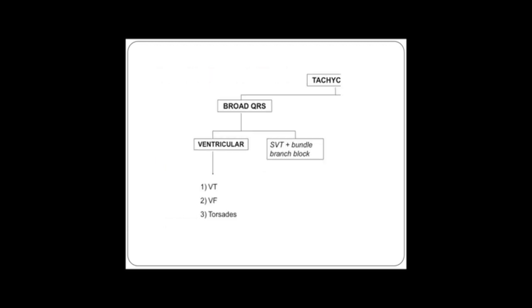So just to say again, broad complex is usually ventricular, except in a situation where you have one of these bundle branch blocks and a supraventricular tachycardia. Now, the two ventricular tachycardias that you must, must know about is VT and VF. Forget about torsades for the moment. It's not important.